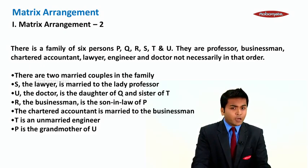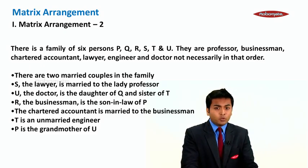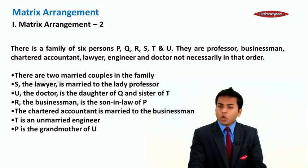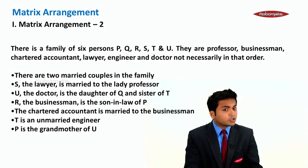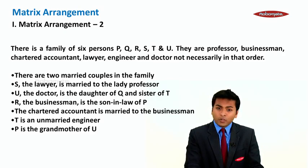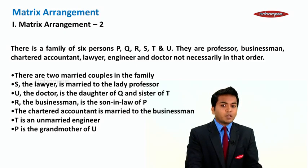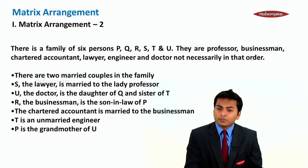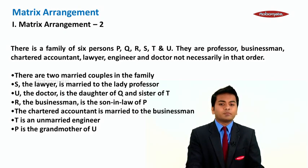There are two married couples in the family. S the lawyer is married to the lady professor. U the doctor is the daughter of Q and sister of T. R the businessman is the son-in-law of P. The chartered accountant is married to the businessman. T is an unmarried engineer. P is the grandmother of U.